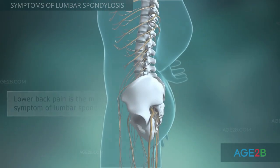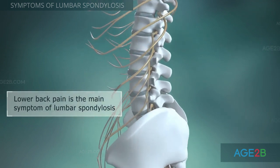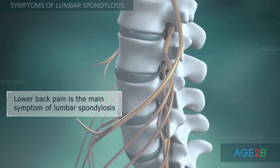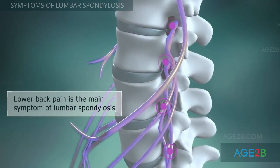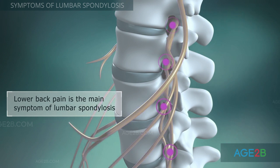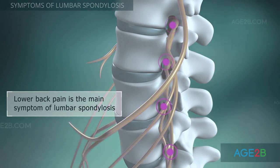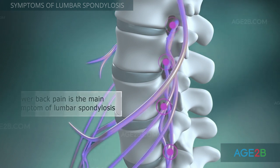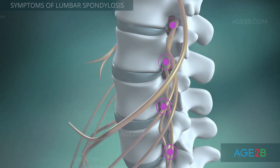The first and main symptom of lumbar spondylosis is pain in the lower part of the spine. It occurs due to compression of nerve roots from disc herniation, bone spurs, or thickened ligaments.